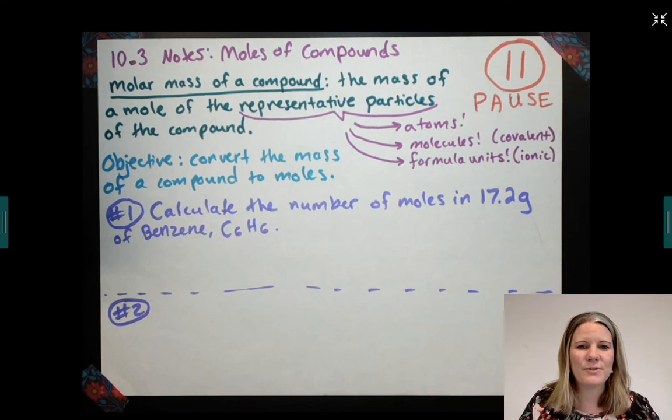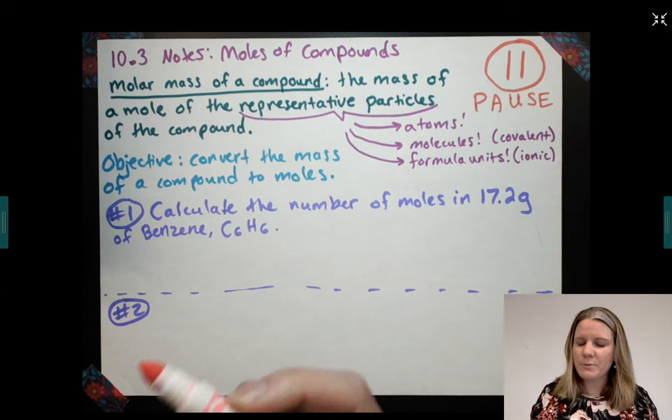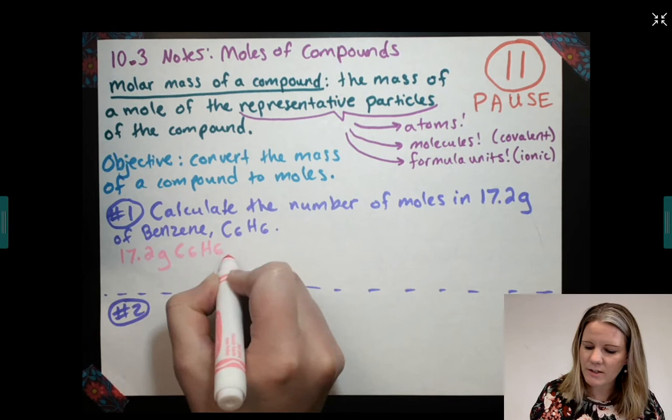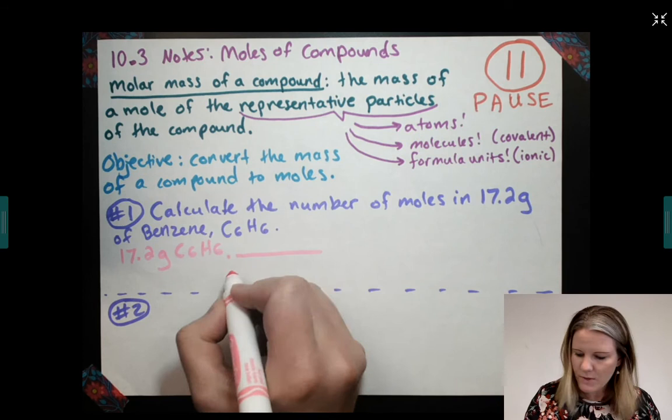And if you have unpaused at this point or if this is your first time through the video, we shall move along. As we're calculating anything in this chapter, we have to ask ourselves the question, what are we given? And what we're given in this problem is 17.2 grams of C6H6. And again, the question comes up, Mrs. Greif, do we really have to copy all that down? Do we have to put grams? Do we have to put C6H6? And the answer is absolutely yes. So on your homework, make sure you are showing your work for all of that. Grams on top, grams on the bottom as we've been learning this whole chapter.